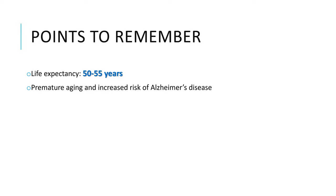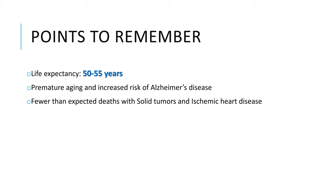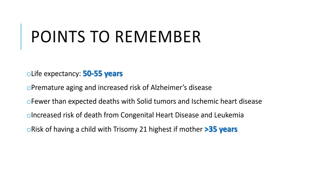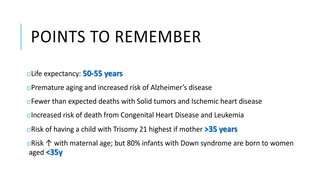Premature aging and increased risk of Alzheimer's disease are classically associated with Down syndrome. Fewer than expected deaths occur in Down syndrome patients due to solid tumors and ischemic heart disease, meaning Down syndrome is partially protective against these. However, there is increased risk of death from congenital heart disease and leukemia. The risk of having a child with Down syndrome is highest if the mother is over 35 years, but 80% of infants with Down syndrome are born to women under 35 years, simply because younger women have a higher birth rate.